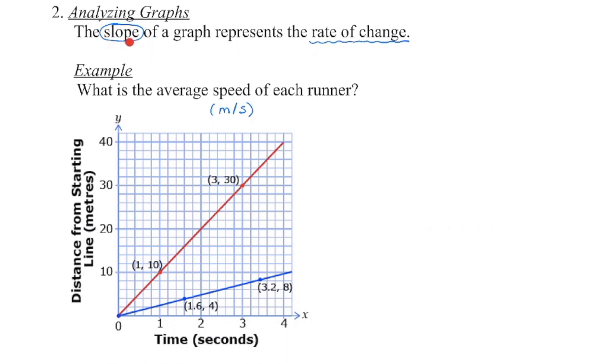We know that the slope of a graph represents the rate of change. Speed is a measure of distance compared to time. By looking at how much a line is changing in vertical distance compared to a certain amount of horizontal change, we can get the slope rise over run, change in Y over change in X. In this case, my Y axis represents distance. My X axis represents time. So I'm looking at what's the change in distance for a given amount of time.